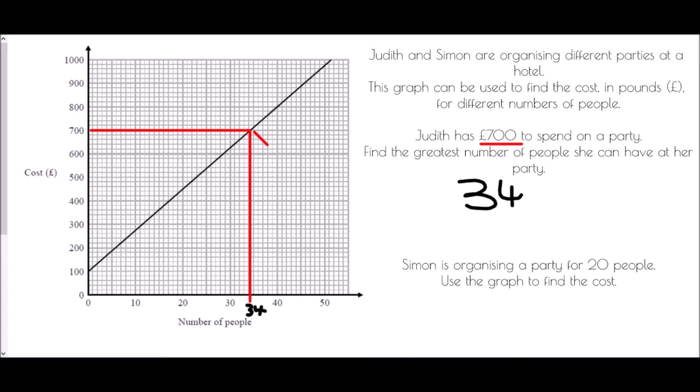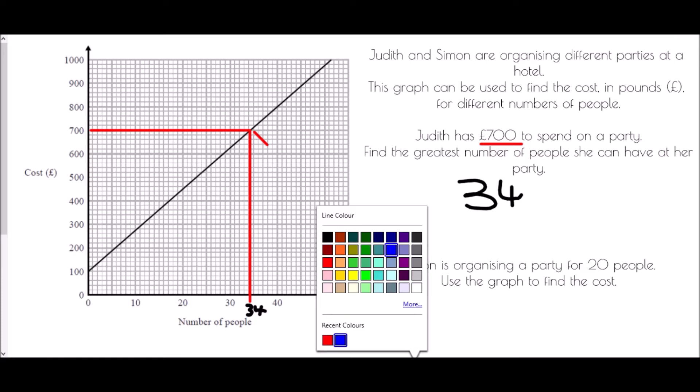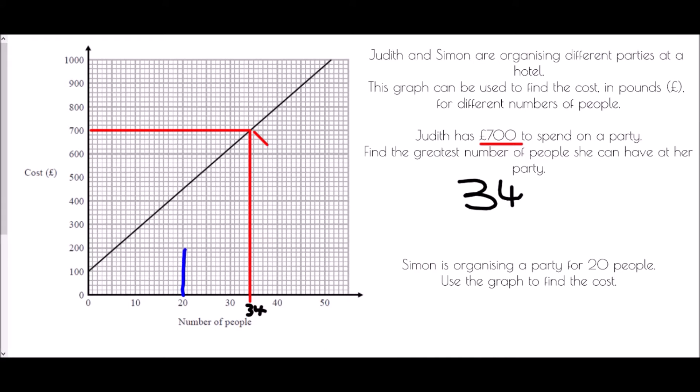Simon is organizing a party for 20 people. We need to use the graph to find the cost. We're going to convert the number of people, which is 20, by drawing a straight line. Draw straight up from 20 to the conversion graph, then draw straight across from that point to read off the cost. This may be slightly inaccurate, but we can see that's three squares up from 400. There are five squares representing 100 pounds, so each square is 20. For me, this is £460 for those 20 people.